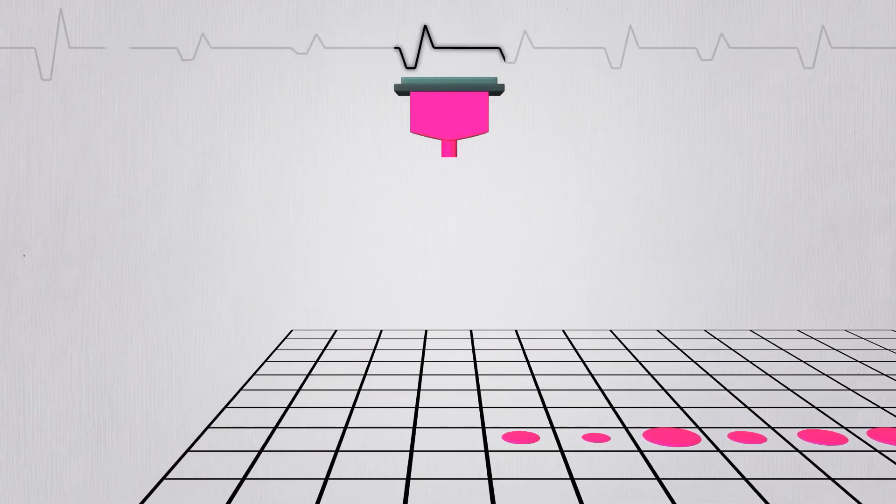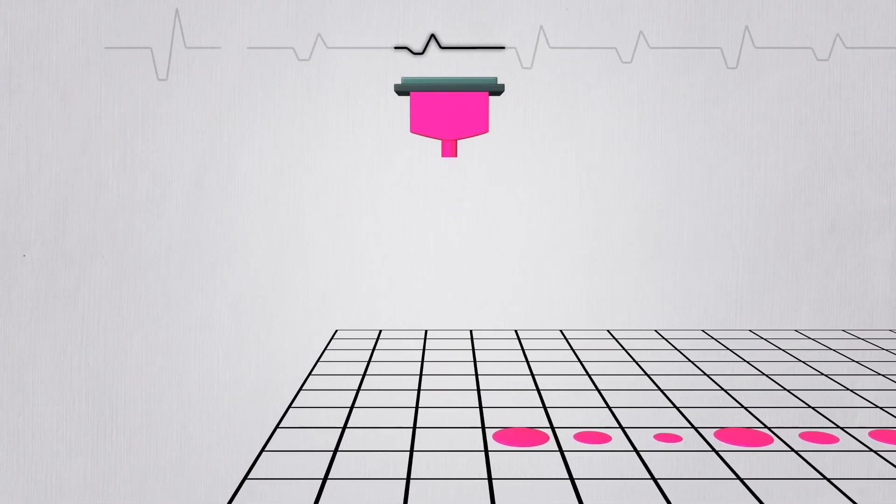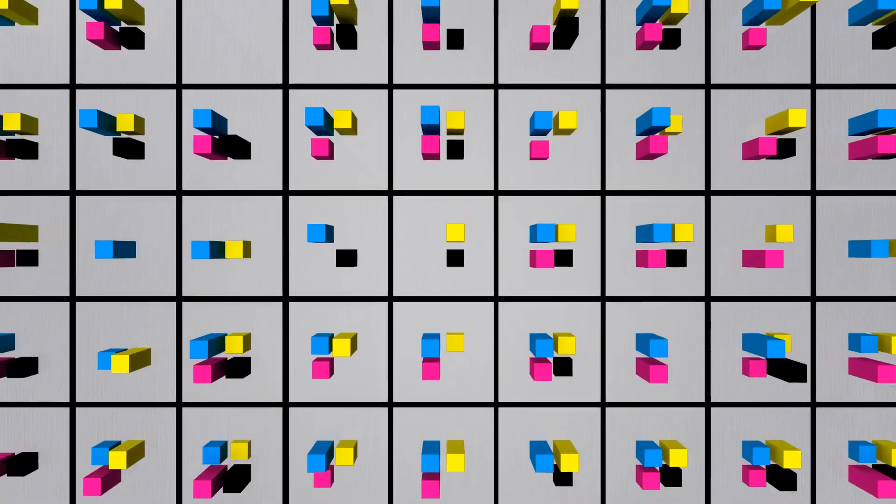The amount of ink droplets differ based on the strength of the electric charge. Each color is determined in quantity in designated sections. The inks are mixed, creating the color.